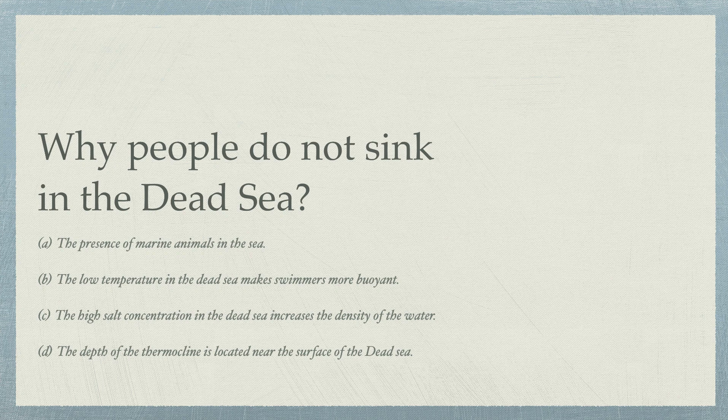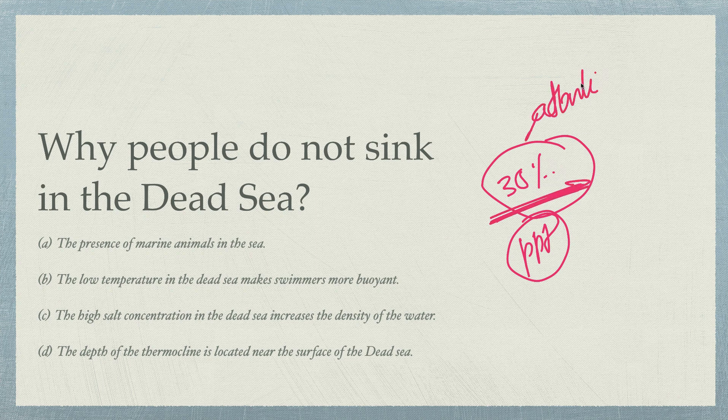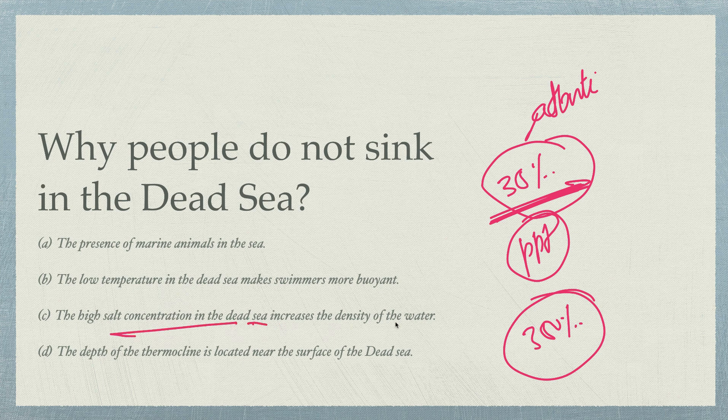Another question: Why do people not sink in the Dead Sea? The Dead Sea — you should know where it is. The options are: presence of marine animals in the sea; low temperature makes swimmers more buoyant; high salt concentration increases the density of the water; thermocline is located near the surface. The presence of marine animals has no bearing on floating — that's not logical and statement one is wrong. Low temperature also has nothing to do with it — statement two is wrong. The high salt concentration is the correct answer.